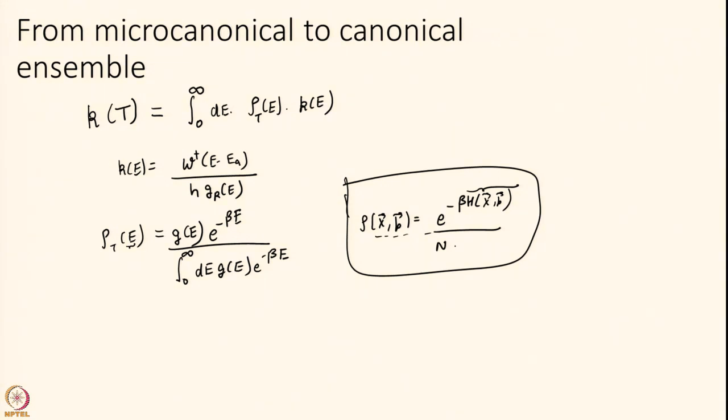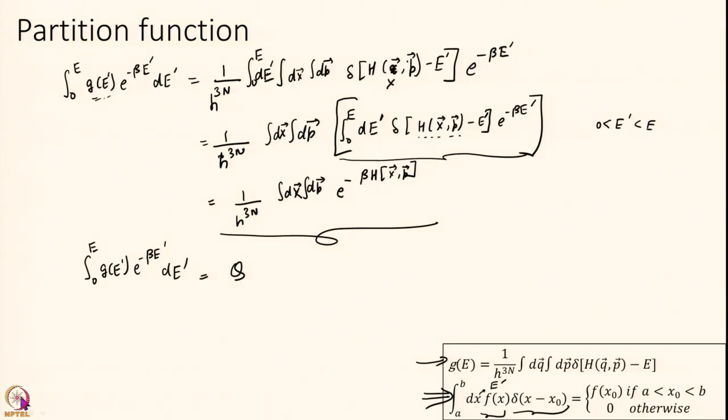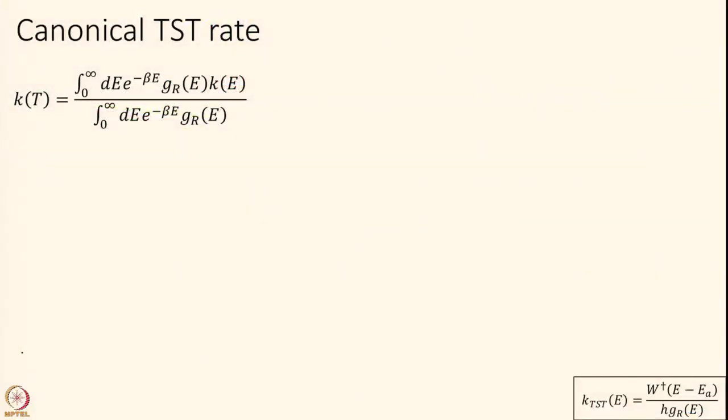Integral from 0 to E of G E prime e to the power of minus beta E prime dE prime is equal to Q. Now, here when we are doing this integral, this rho was supposed to be an integral only over reactant space. Basically what we then do is we consider this to be only reactant partition function, because it is the same idea as always: we are only thinking that my entire population is limited to reactants. I am integrating only over reactants.